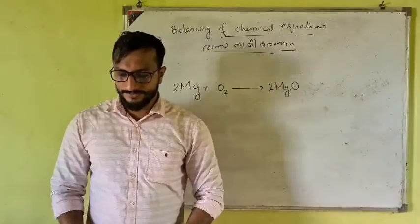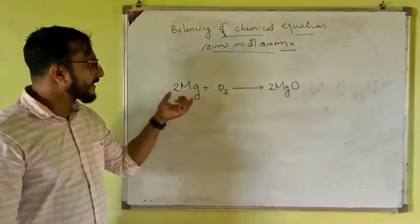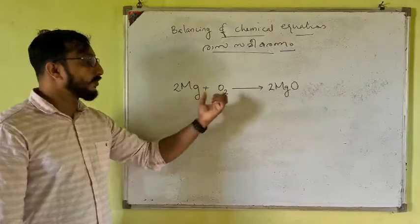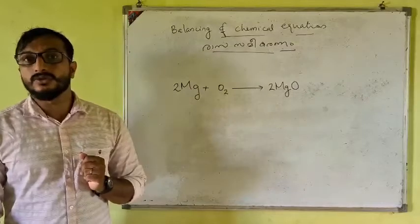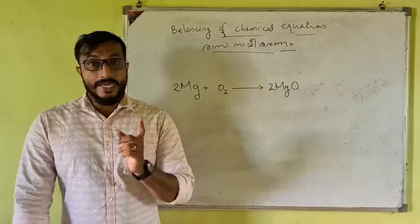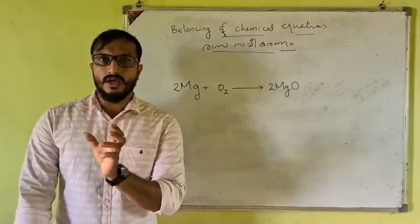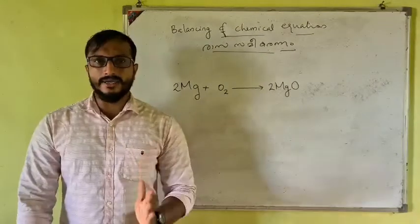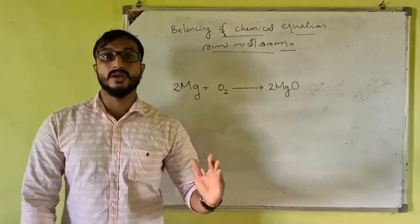We are going to take a few examples. If you look at the reactant side and the product side, magnesium oxide must be balanced. Equalizing the number of atoms of each element in the reactant side and the product side is called balancing of a chemical equation.